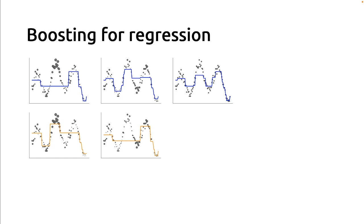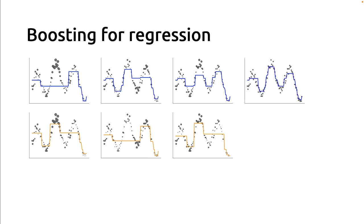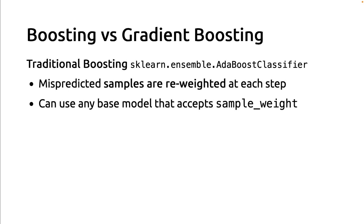Iteratively, we refine the prediction of the ensemble, progressively removing the prediction errors of the previous steps. We re-weight, fit a new tree, and progressively the ensemble predictions become better and better — they underfit less and less. The first model was underfitting a lot; each subsequent ensemble underfits a bit less.